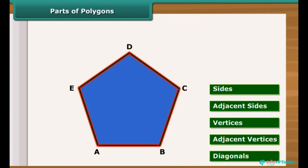These are the sides of polygon. Any two sides with common endpoints are called adjacent sides. For example, AB and BC, BC and CD, CD and DE, DE and EA are adjacent sides.